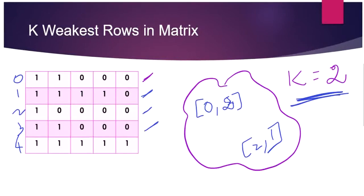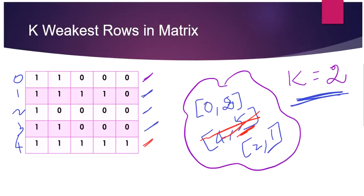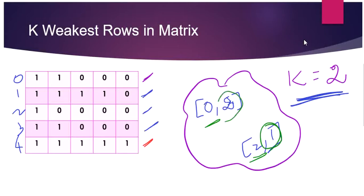After removing row 3, we enter row 4 with 5 soldiers. Since 5 is the maximum, row 4 is the strongest and gets removed. Our heap is now done, holding row 0 with 2 soldiers and row 2 with 1 soldier. Returning results in order of weakest first: row 2 (1 soldier) then row 0 (2 soldiers), so the output is [2, 0].